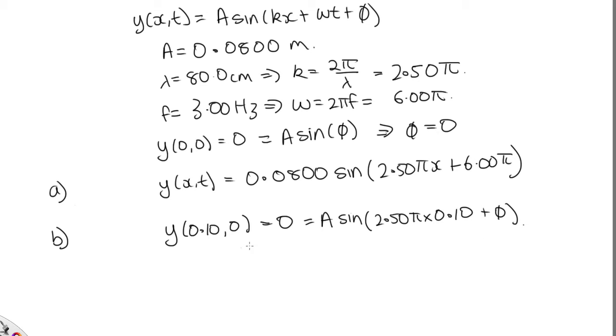So we need 2.50 pi times 0.1, which is 0.25 pi plus phi, and this has to equal 0 because sine of 0 is 0. So this tells us phi is equal to minus pi on 4.